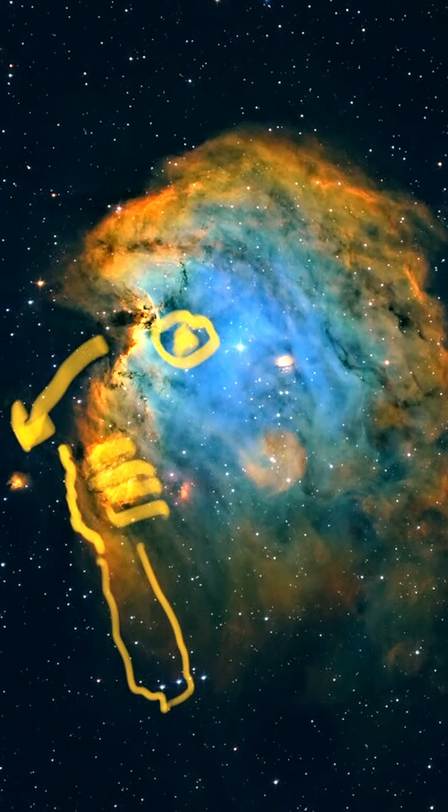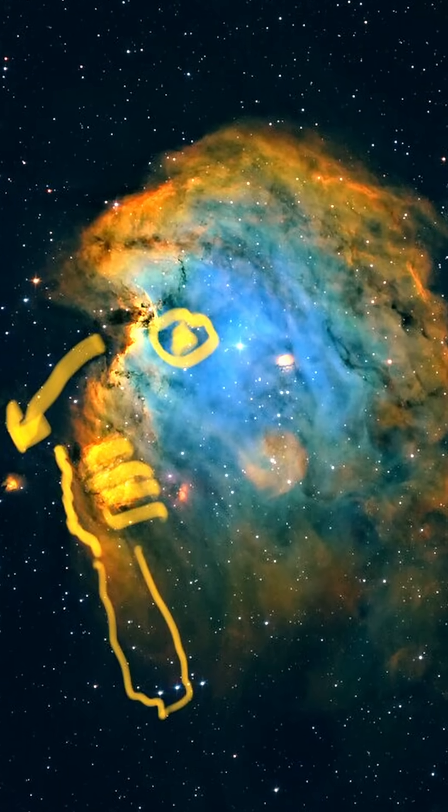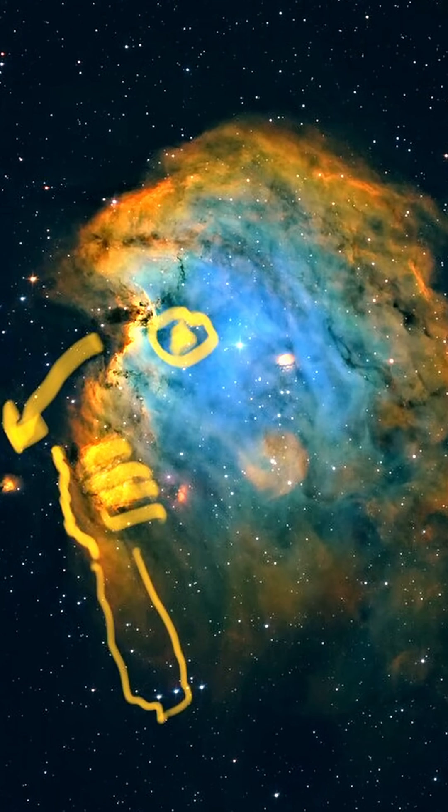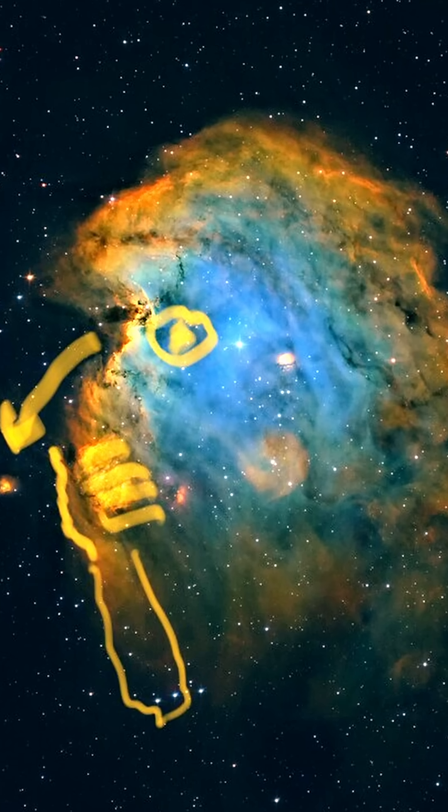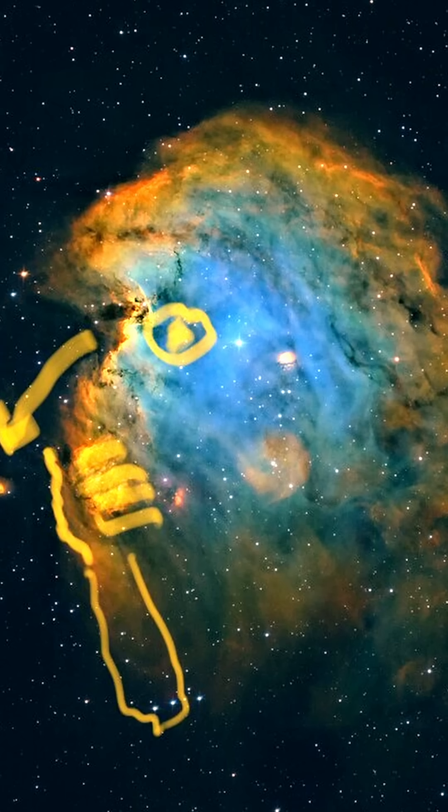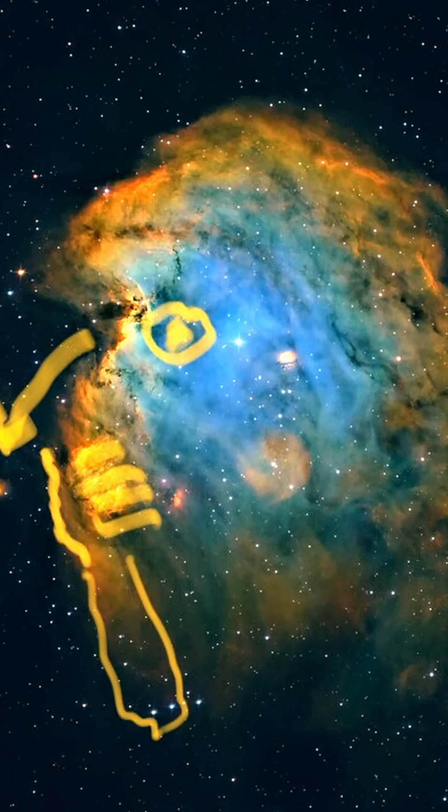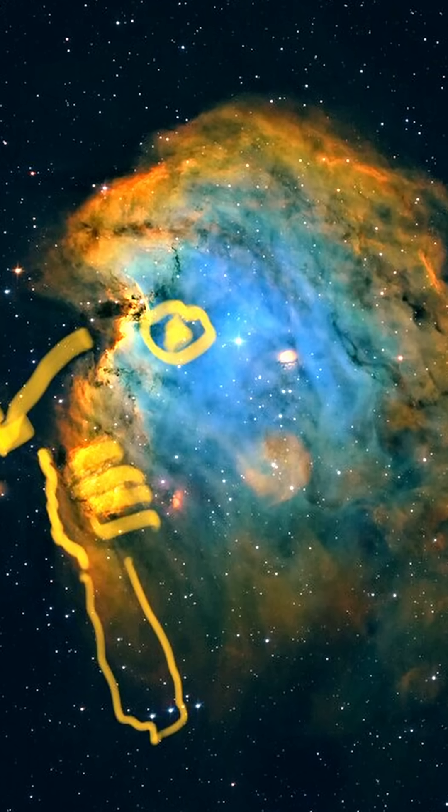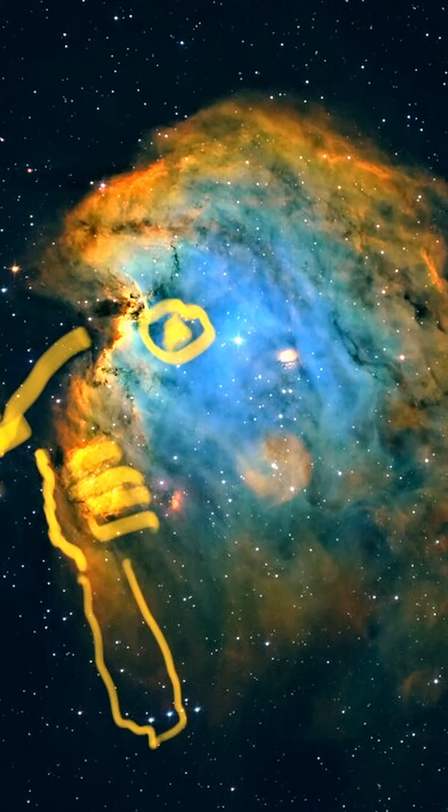Meet the Monkey Head Nebula, officially known as NGC 2174. This stellar nursery is a wild storm of gas and dust where newborn stars ignite in a celestial masterpiece. Ultraviolet light from these young stars carves out glowing structures, shaping the nebula's eerie primate-like face.